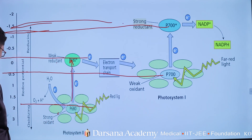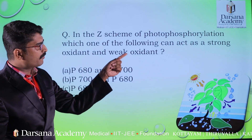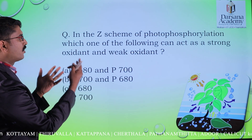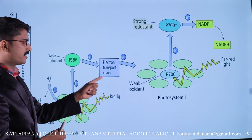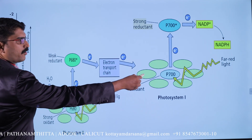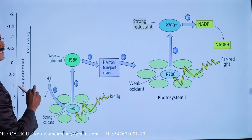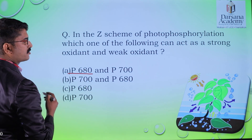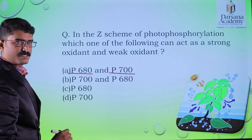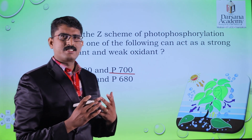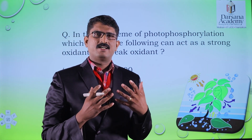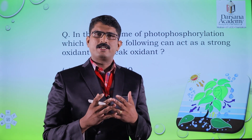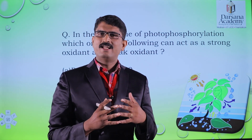Coming back to the question: in the Z-scheme of photophosphorylation, which molecule acts as a strong oxidant and which acts as a weak oxidant? p680 is the strong oxidant and p700 is the weak oxidant. These are the two questions discussed today. Hope you understand the concept. If you have any doubt, please comment in the comment box. Feel free to ask your doubt, and please subscribe to our channel. Thank you.